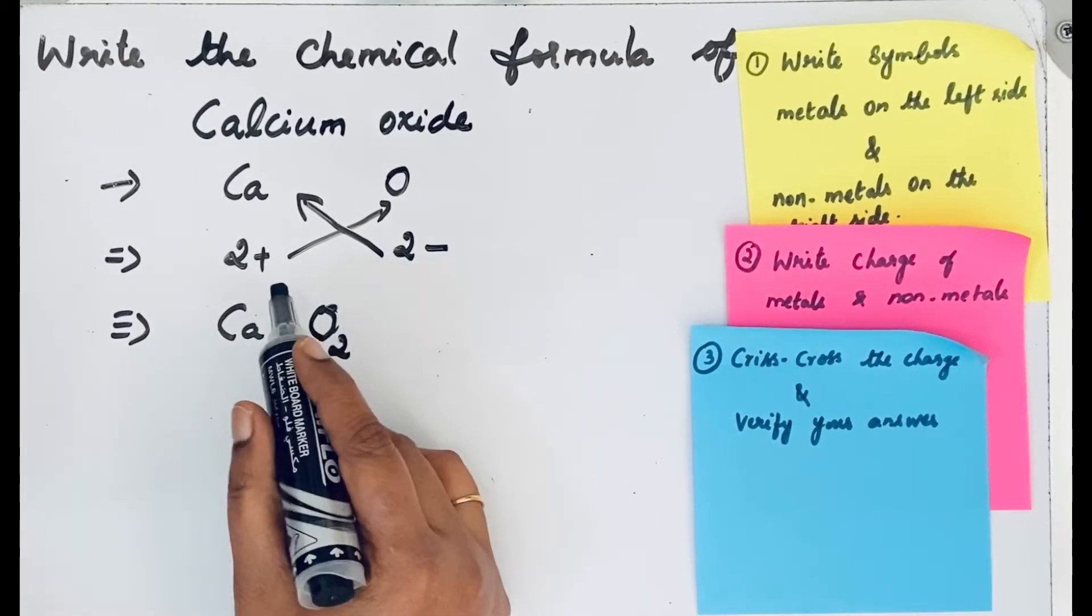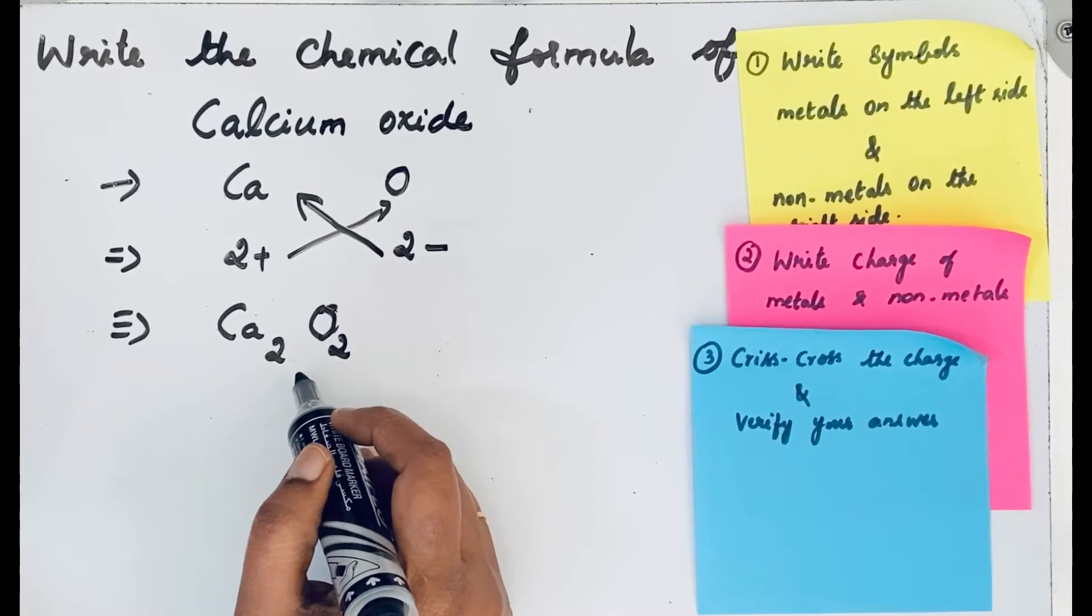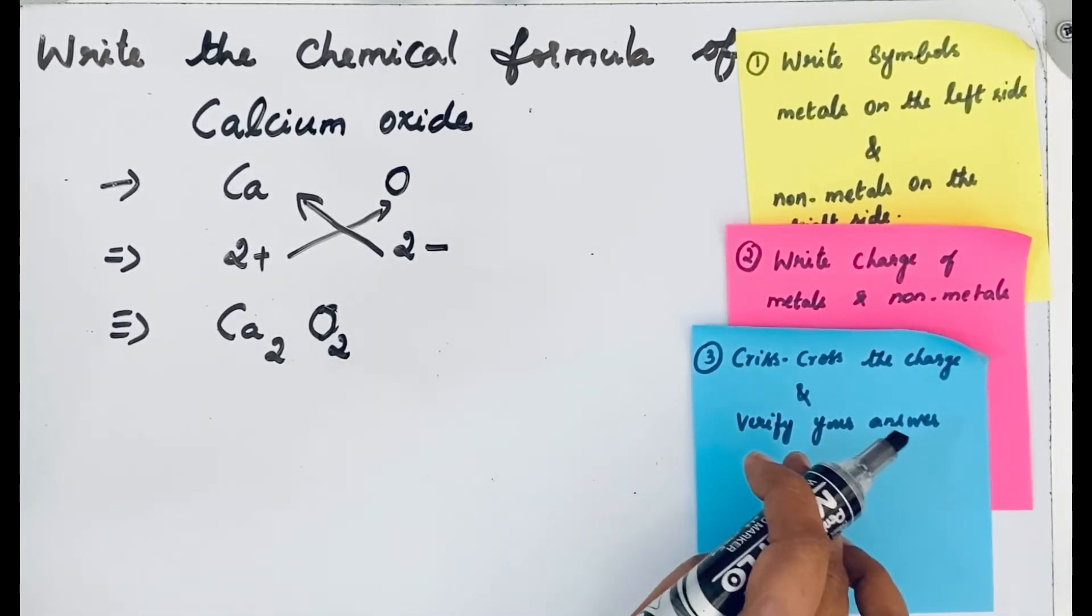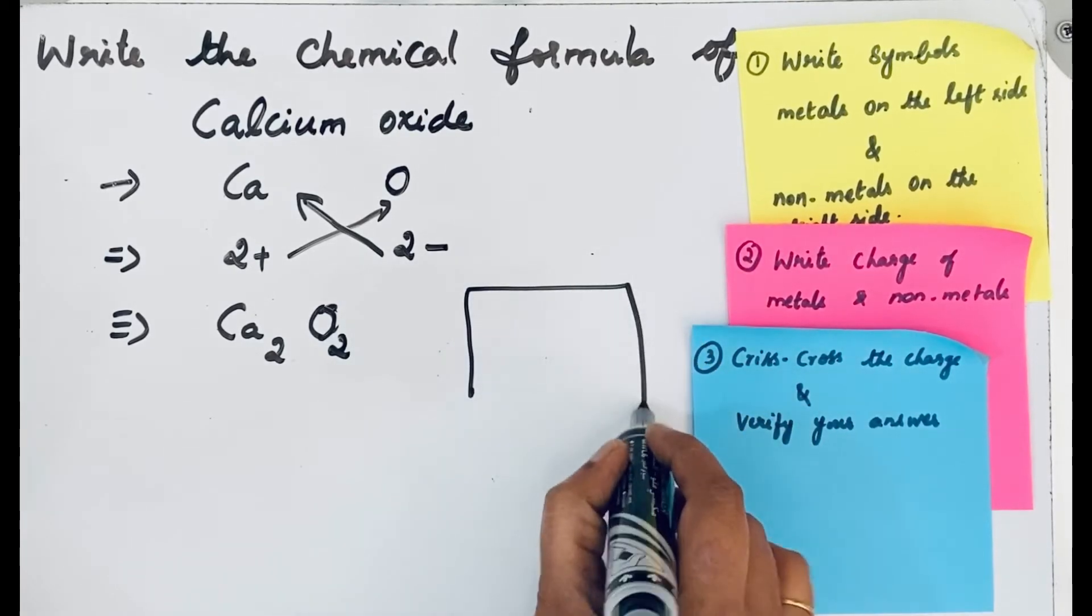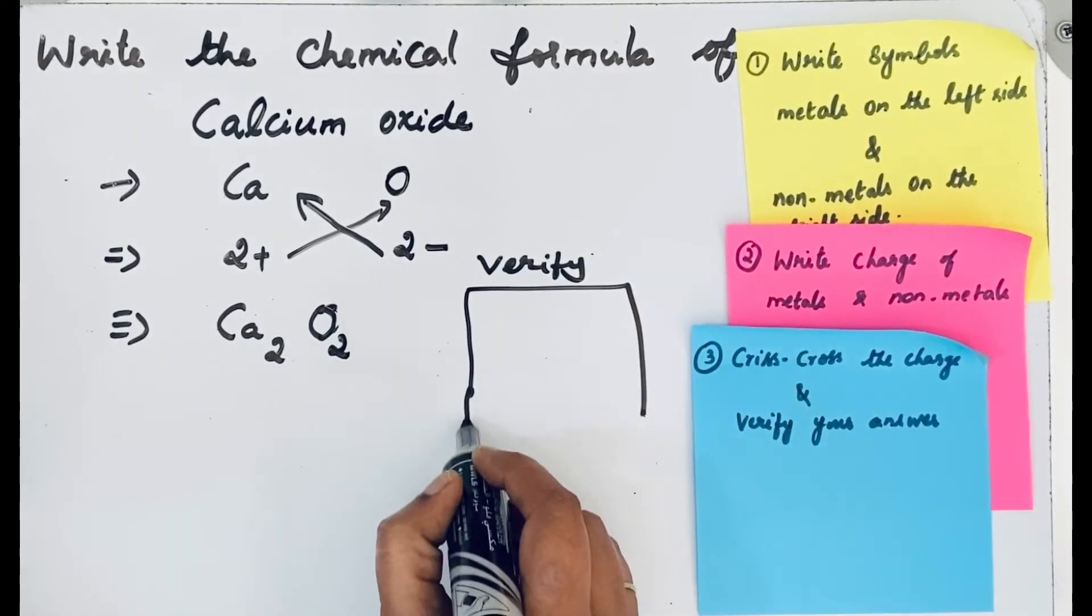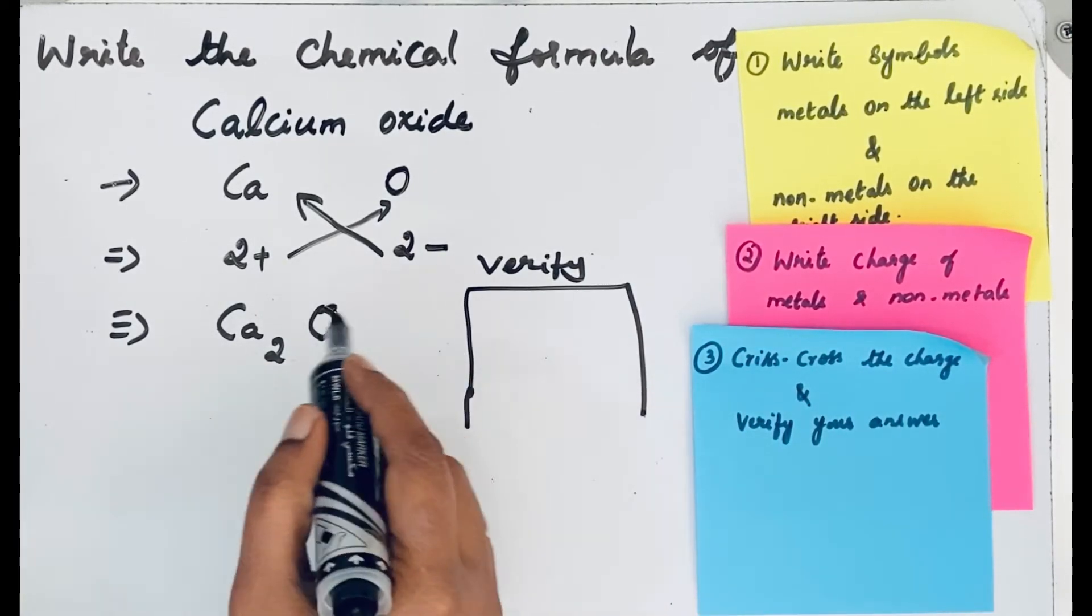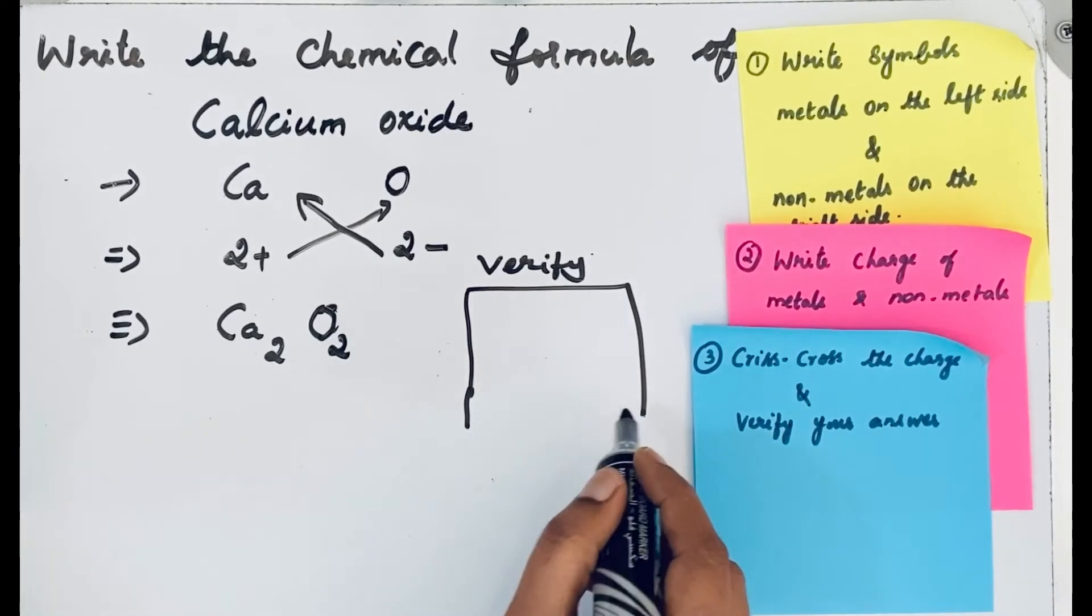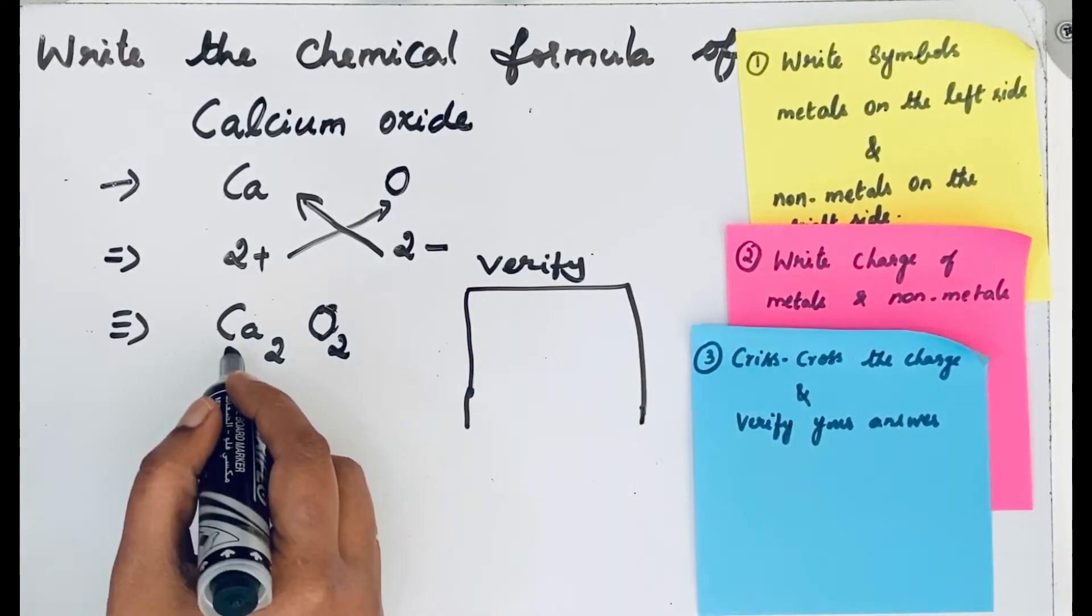Now we are going to verify our answer. To verify the answer, ions combine and produce compounds. In compounds, the charges must be balanced - it means the compounds are neutral. Here you see...